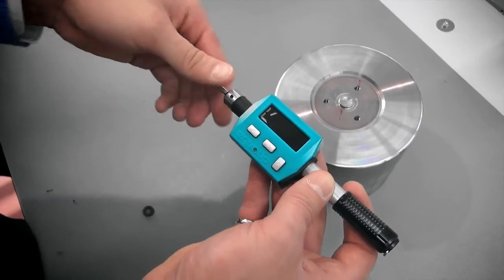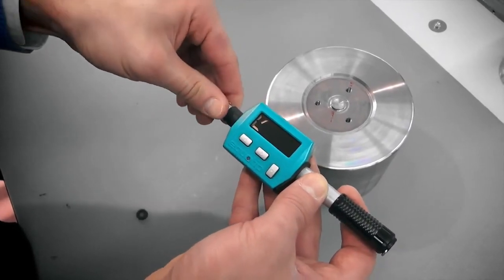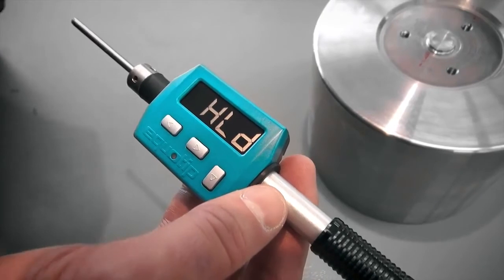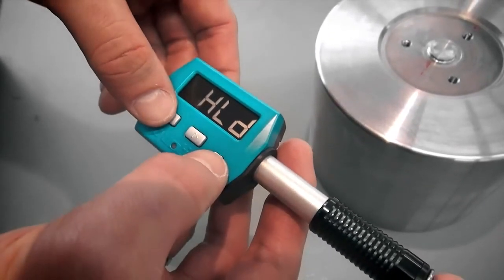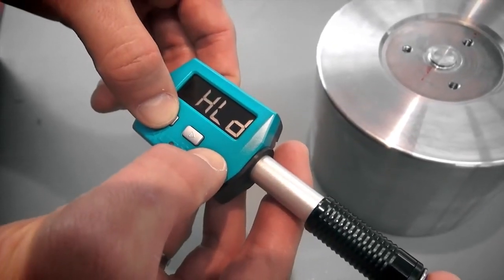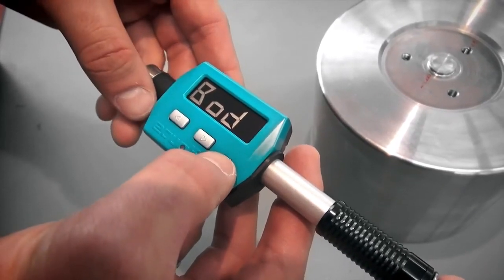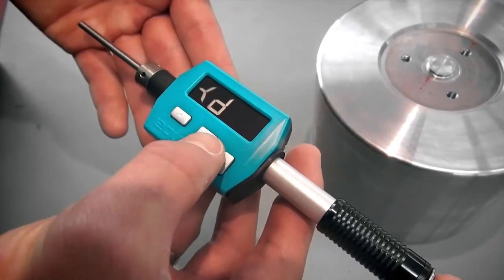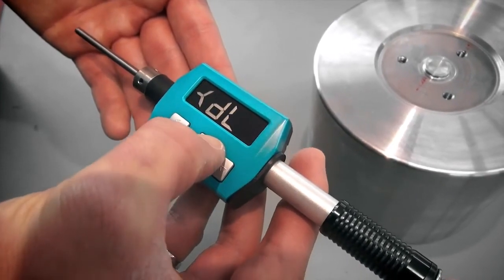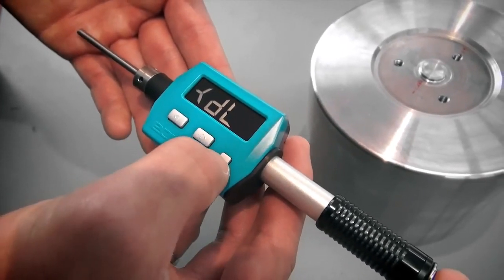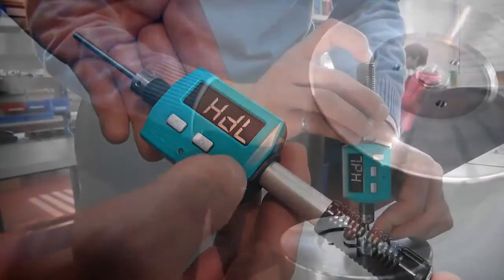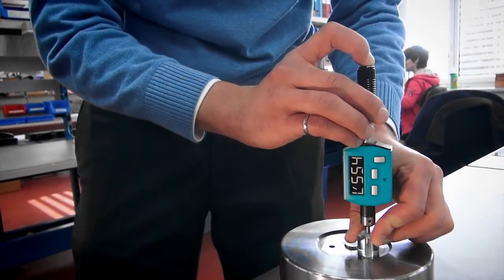To enter the advanced menu for additional functions such as DL mode, press the down and the left key simultaneously for at least 2 seconds. The screen displays BOD, which stands for impact body. Then press the down key and select DL by pressing right. Press the down key to confirm. Use the plexiglass sleeve DL for better alignment.